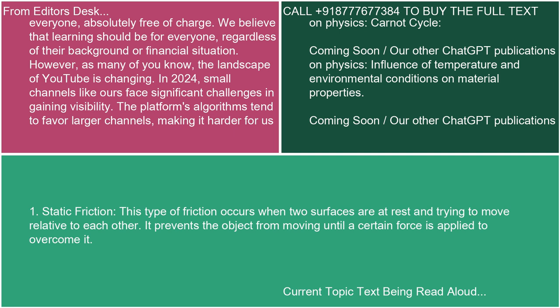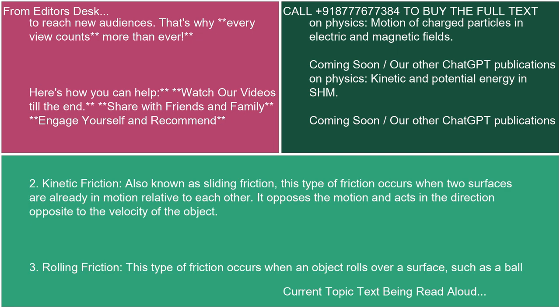2. Kinetic Friction: Also known as sliding friction, this type of friction occurs when two surfaces are already in motion relative to each other. It opposes the motion and acts in the direction opposite to the velocity of the object.